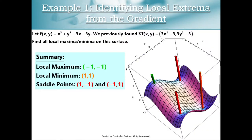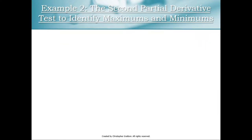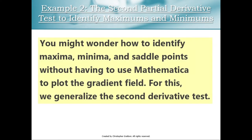So we've classified our maxes and mins: local maximum at (-1,-1), local minimum at (1,1), and two saddle points. But you might wonder — I'm not always going to have Mathematica at my fingertips. I won't always be able to produce a contour plot and a gradient vector field to classify candidates for maxes and mins on the surface. So how do I do this without Mathematica?